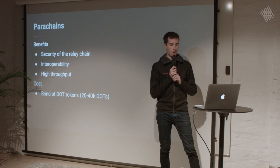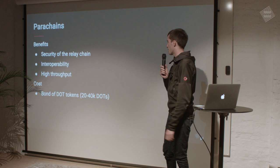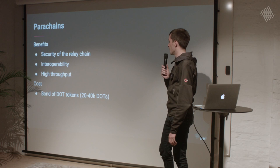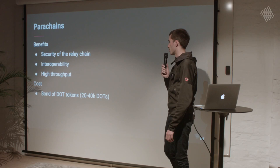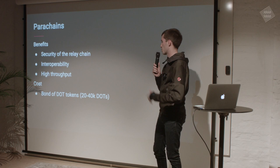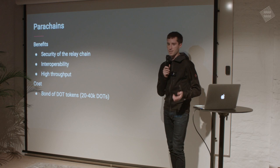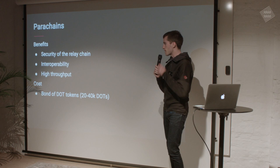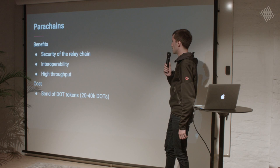We do this via Parachains, which are the chains that can communicate on Polkadot. The benefits of being a parachain are that you get security — you don't have to worry about building a validator set or consensus algorithms. All the finalization is done through Polkadot. You also get interoperability — you can send and receive arbitrary messages from other chains — and high throughput. Polkadot has a six second block time and your chain can also have a six second block time, basically giving you the right to propose a block every six seconds. You're guaranteed to always have validators connected to you, ready to accept your next block.